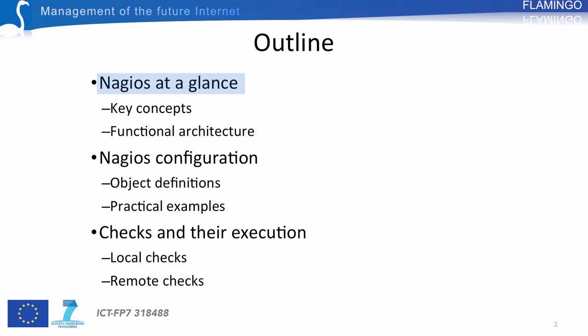The second part is dedicated to Nagios configuration. The objective is to show you how to properly configure Nagios through the definition of new objects. This part will be illustrated through an example scenario.